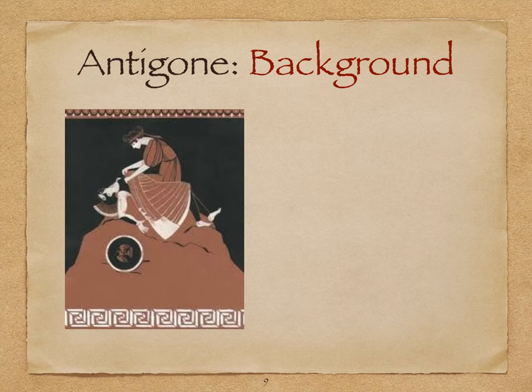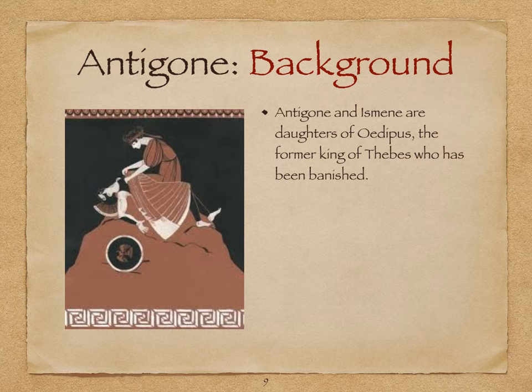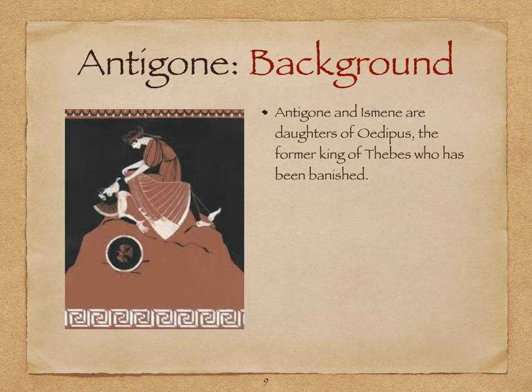Here's some background you need to know before starting the play. Antigone and Ismene are sisters — daughters of Oedipus, who is dead at this point. Oedipus was the former king of Thebes and had been banished for something horrible he had done. If you've read Oedipus Rex, you can learn all about it. Without knowing, it was fated, so it's not all his fault, but nevertheless he did something that brought a curse upon his family — and that's why all of these other people's lives end up so horrible.